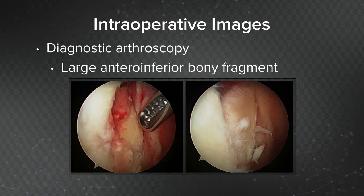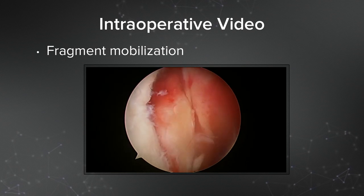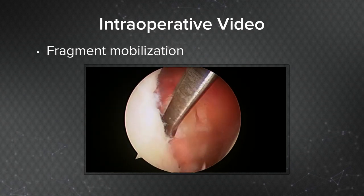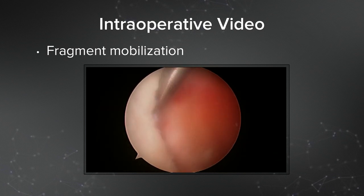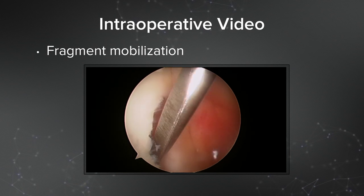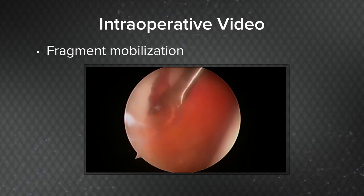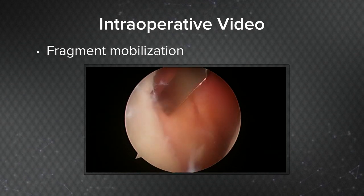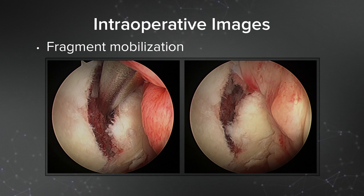Here are some intraoperative images. This is the diagnostic arthroscopy portion of the case, and you can see the large anterior-inferior bony fragment. Here is video of mobilizing the fracture — I placed a liberator elevator between the fracture site. You want to mobilize that fracture and make sure it's completely loose. If it's partially attached, detach it so you can get an anatomic reduction. Don't be fearful of fracturing it further — make sure there's good separation. I'm looking down the high anterior lateral portal right into the fracture site with a shaver to remove all clot, debris, and any comminution, so it's a totally free fragment.